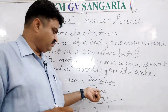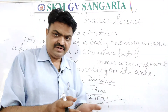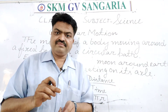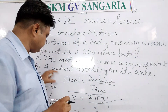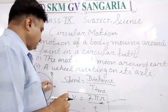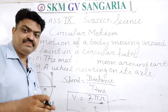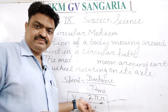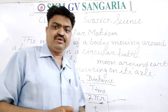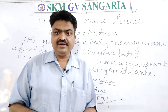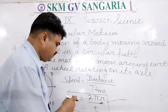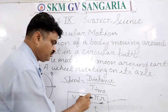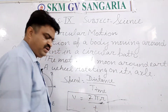And in place of time taken, we write the duration — the duration taken to cover the circular path by the object, which is t. So the formula you get is: speed is equal to 2πr upon t.